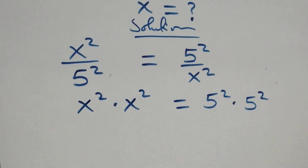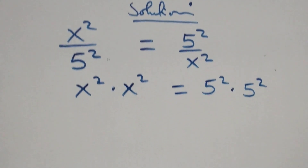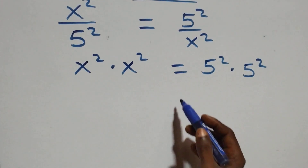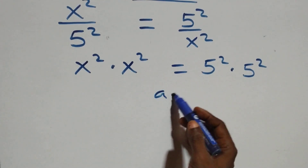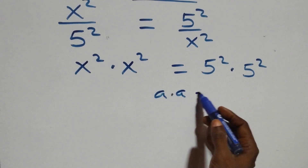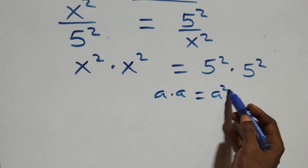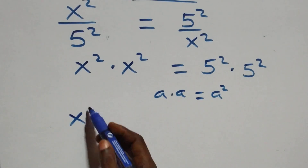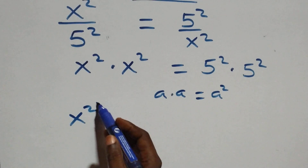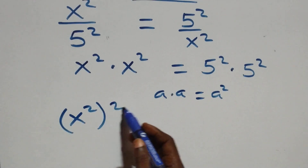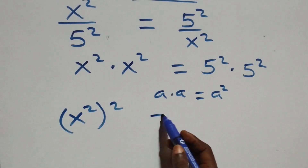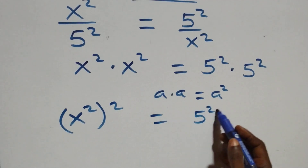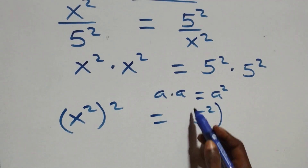The next step here, we can also rewrite this — when we have a times a, that's the same thing as a squared. So we can write it as x squared, all squared, then equals to on this side as well 5 squared, then all squared.